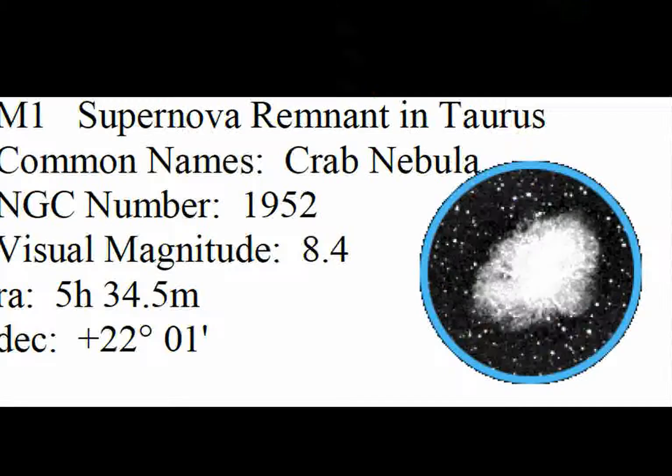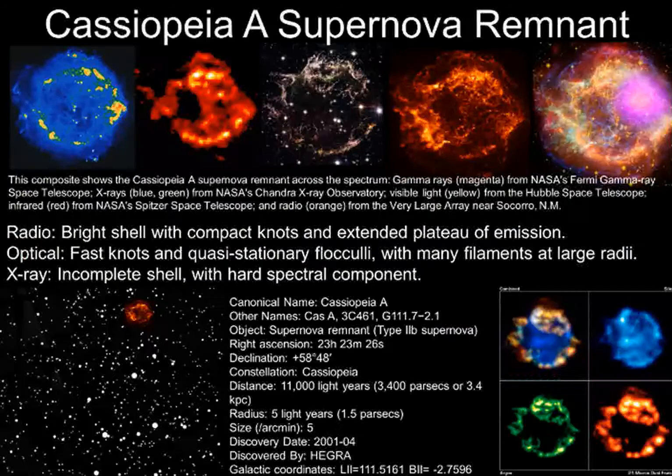Then you will gather information about your object, such as type of object, when discovered and by whom, constellation found in, celestial coordinates, apparent size and true size, apparent and absolute brightness, etc.